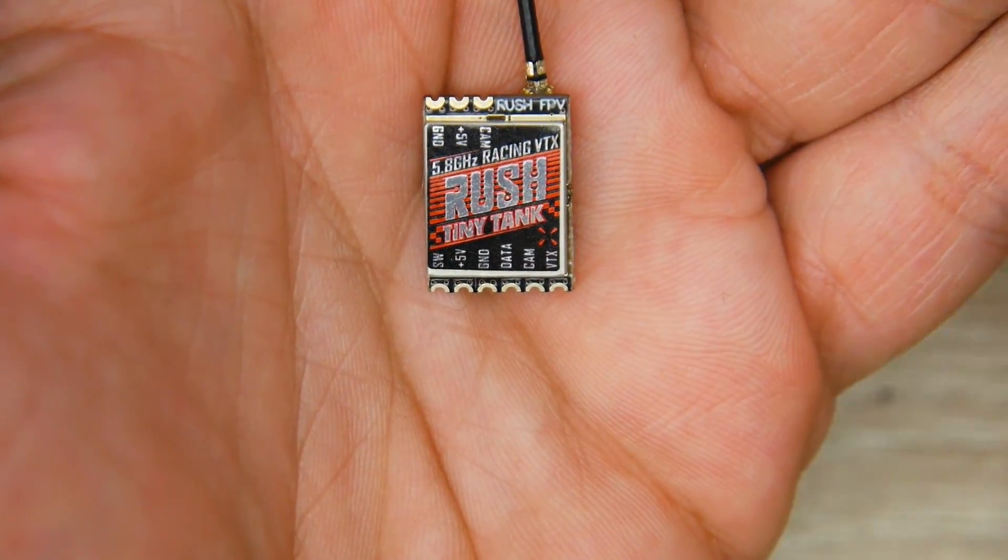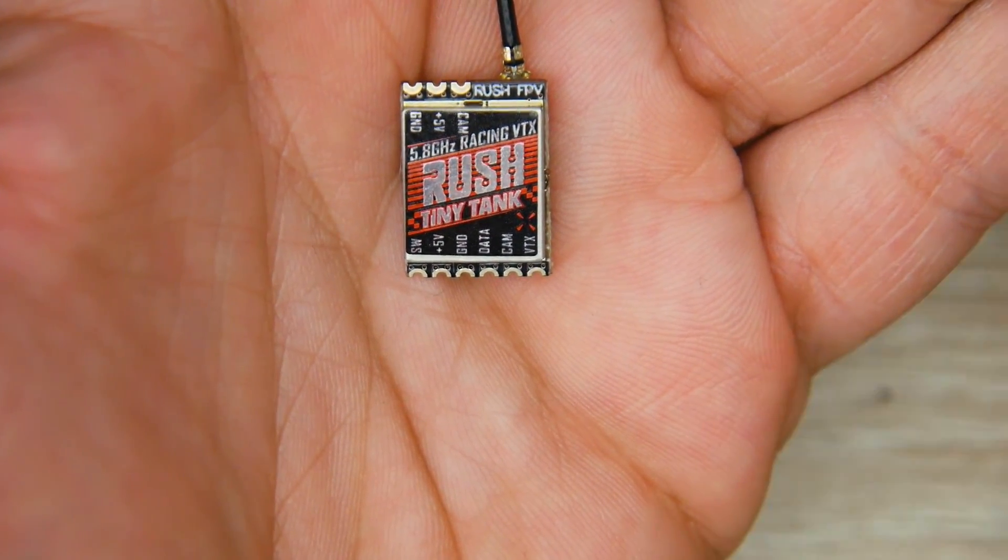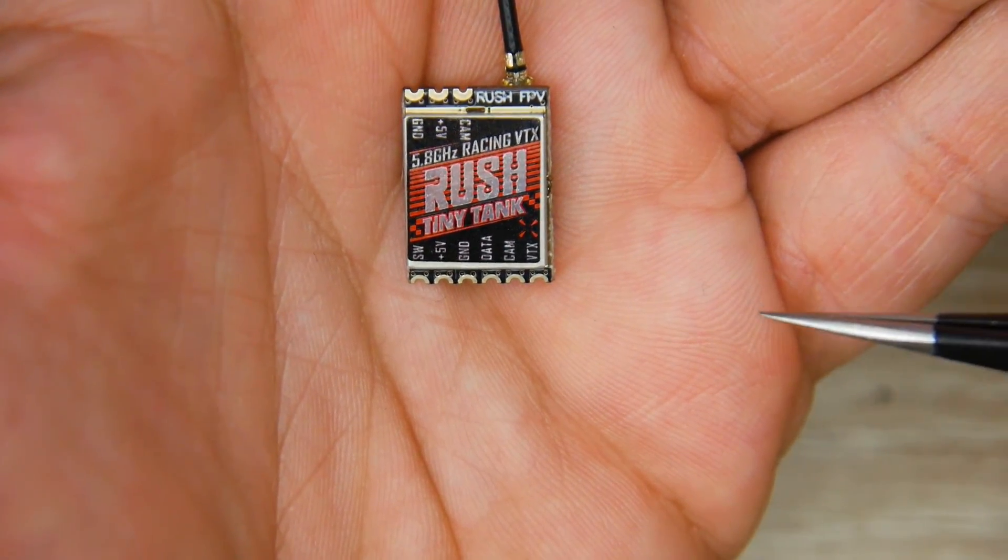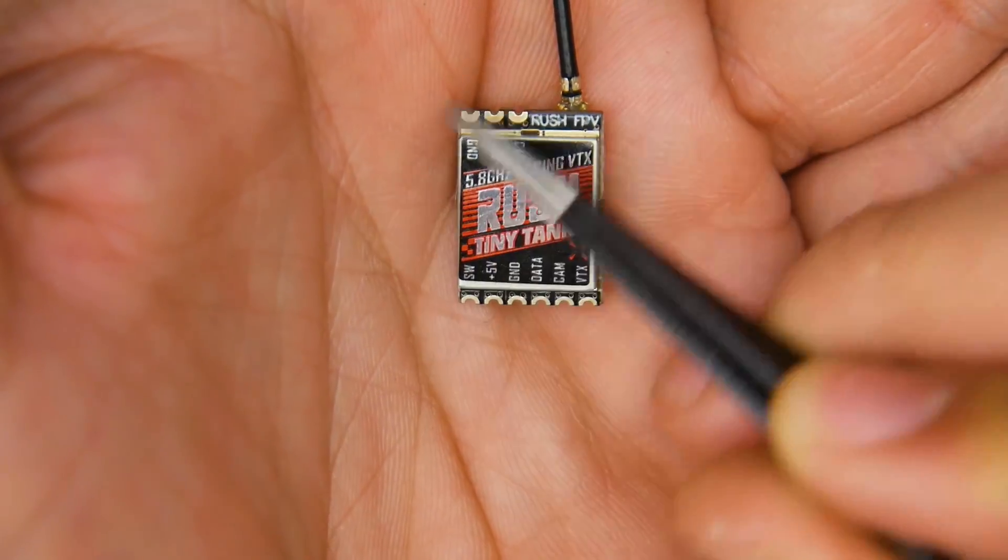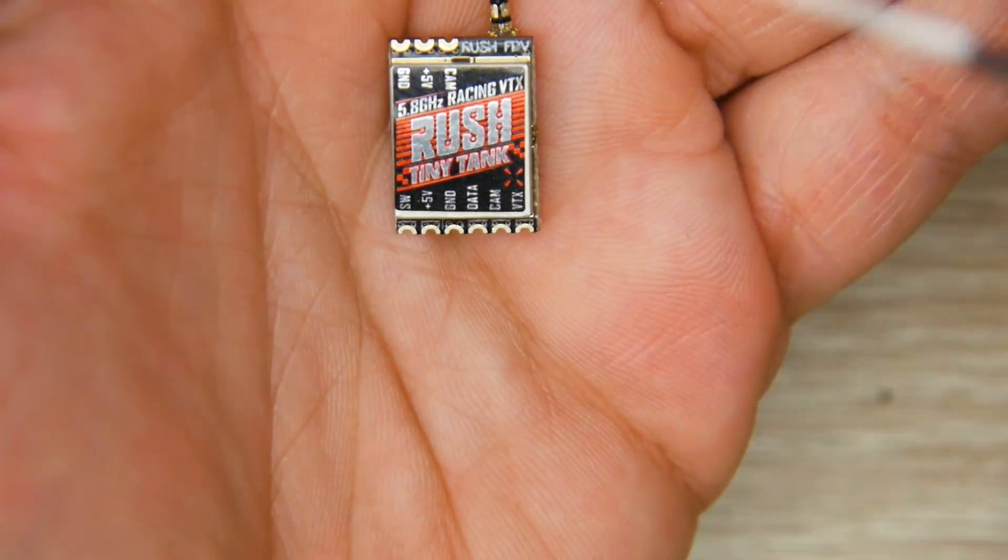The camera pads you want to ignore because more than likely you're connecting it through your flight controller's on-screen display. Ignore the camera parts here, like the ground 5-volt camera. Ignore this part. You don't need this part unless you don't have a flight controller for some reason.